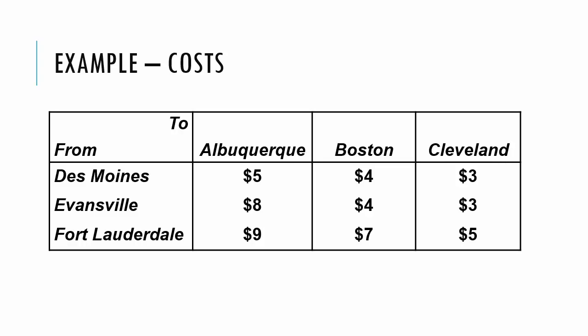Now we have everything we need to formulate the problem. What are our decision variables? You should be able to answer this question. Simply think about what we are trying to do — we want to know how many units to ship from each source to each destination. Therefore, we will need a decision variable that represents this quantity for each pair of source and destination. In our example, we will have a total of nine decision variables.